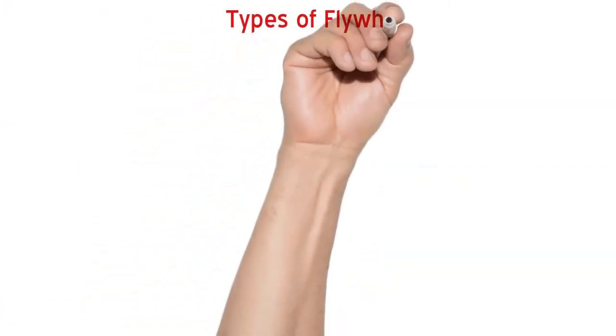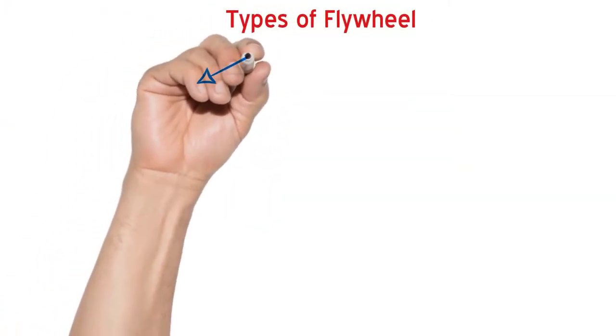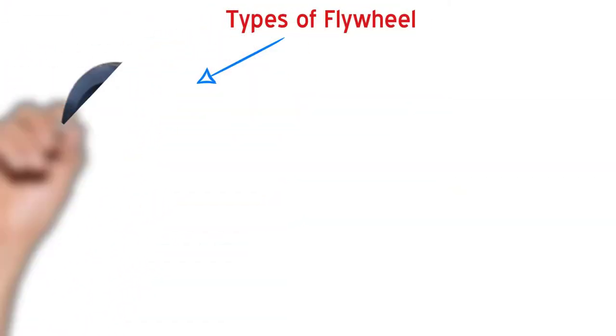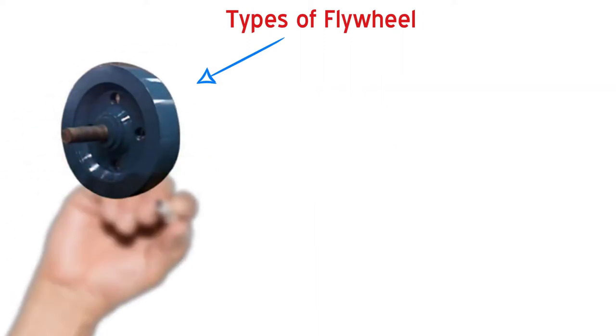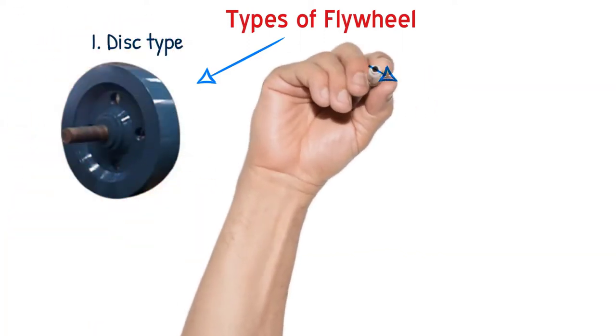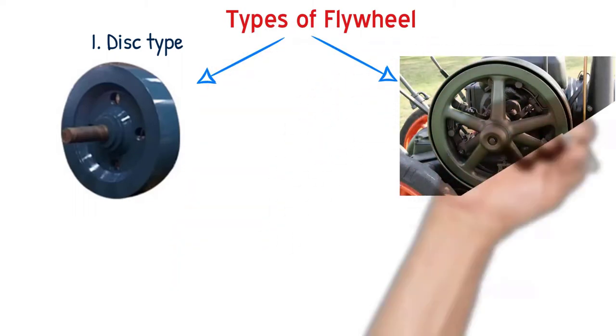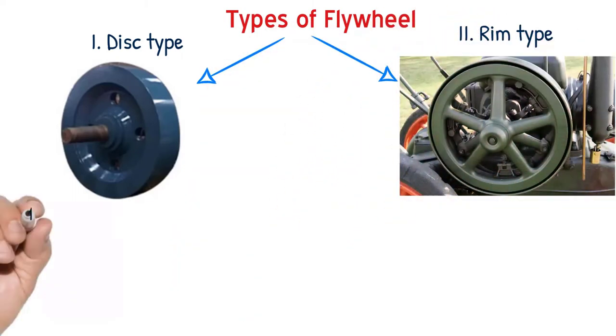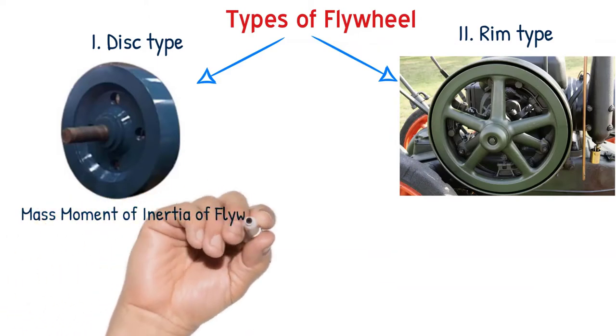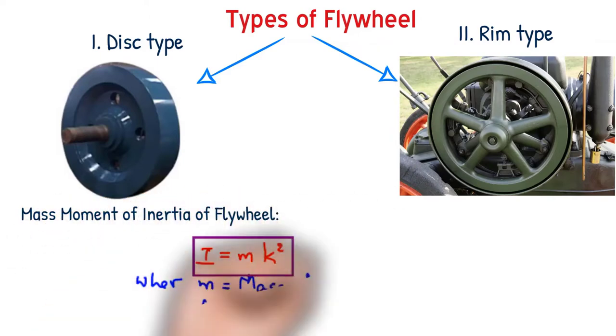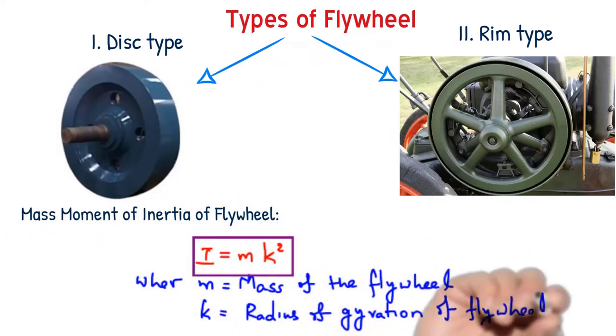There are two types of flywheels used. The first one being disc type and the second one is rim type. As you could see from the pictures, the difference is obvious. In rim type, the mass is distributed away from the center, which is nothing but the hub of the flywheel.